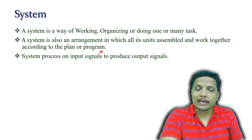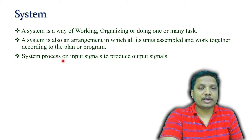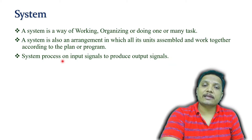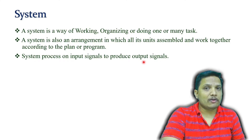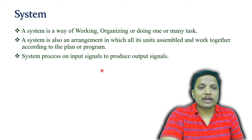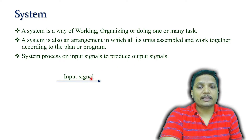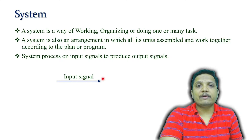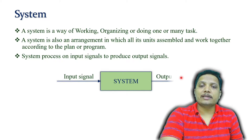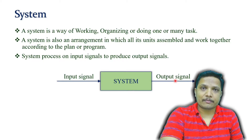The third, easier definition is: a system processes an input signal and produces an output signal. You can observe here we have an input signal that is given to the system, and it produces an output.